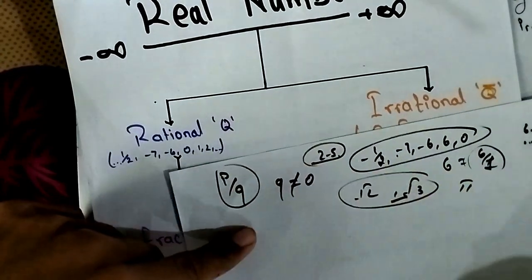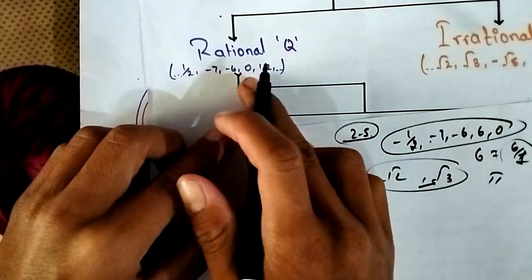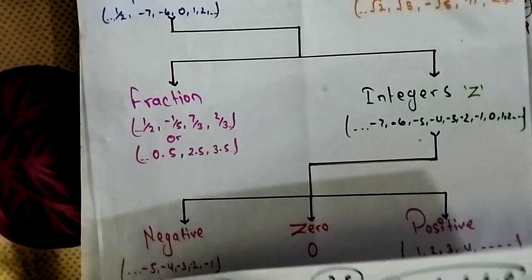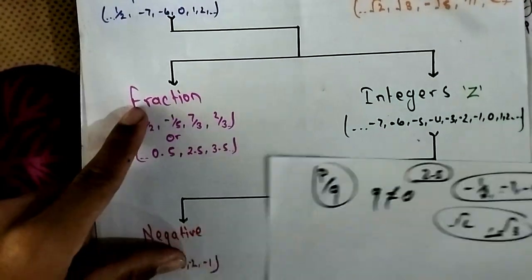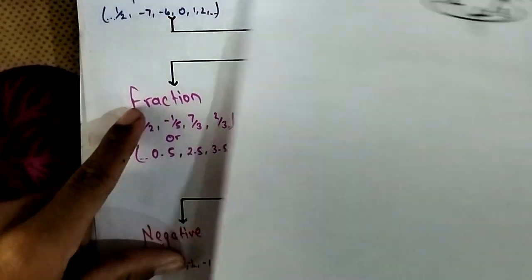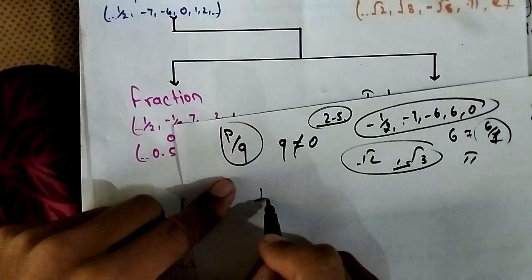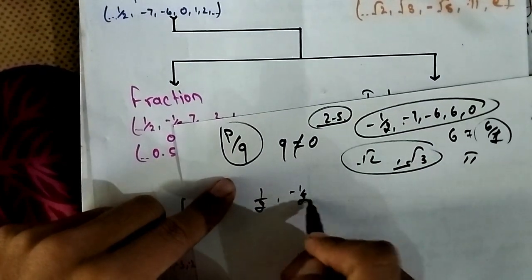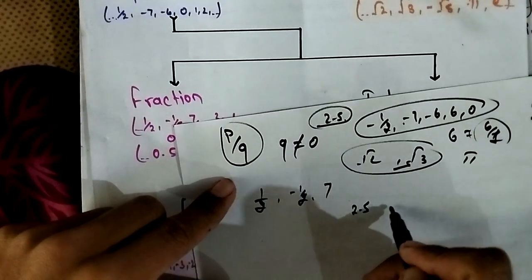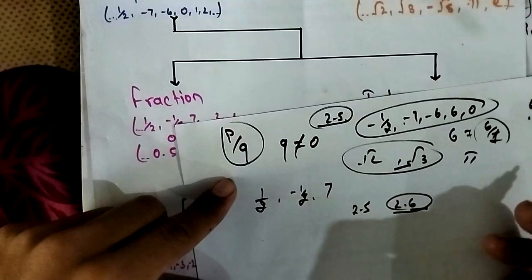The rational number can be represented right here on the number line. Rational numbers come in two types: as part of a fraction, or as integers. For example, one by two, minus one by two, seven — these are fractions. And decimal numbers like 2.5 and 2.6 are also rational.